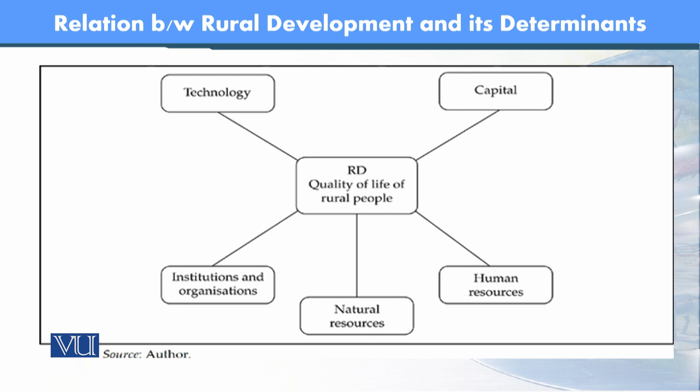سب determinants کا آپس میں interlink ہوگا تب ہی ہم rural development کا basic goal achieve کر سکتے ہیں۔ کسی بھی ایک part کی missing سے goal achieve نہیں ہوگا — اگر institution and organization کی reform کو نکال دیں، یا natural resources یا human resources کو out کر دیں، تب بھی ہم main objective achieve نہیں کر سکتے۔